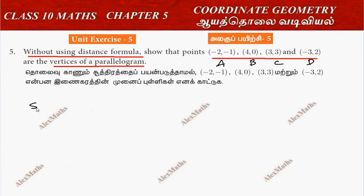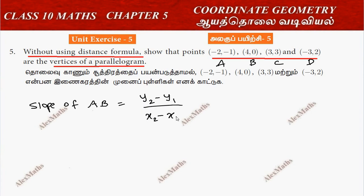So, we need the slope of AB. The slope formula is y2 minus y1 divided by x2 minus x1. That gives us 0 plus 1 by 4 plus 2, which totals 1 by 6.